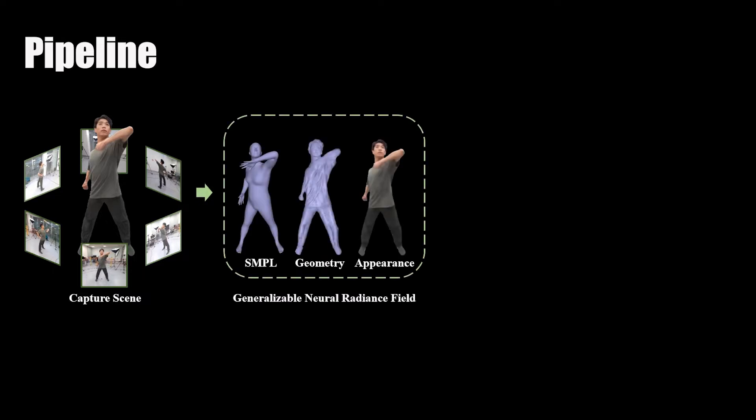Our method consists of two main stages: Generalizable Dynamic NeRF and Neural Appearance Blending Field. Given six RGB cameras around the performer, we first input the videos to our Generalizable Neural Radiance Field and output appearance and geometry results in a very short fine-tuning process.